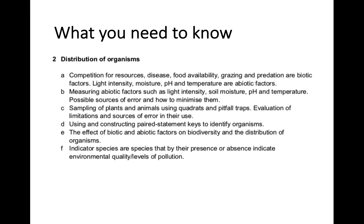That covers Key Area 2, Distribution of Organisms. To summarise: memorise the definitions of abiotic and biotic factors and examples of each; for measuring abiotic and biotic factors, know what can go wrong and how to fix it; practise using paired statement keys and branching keys to identify organisms; and for indicator species, know what they are and examples for both air quality and freshwater quality. Thanks for listening — the next topic will be photosynthesis, coming up soon.